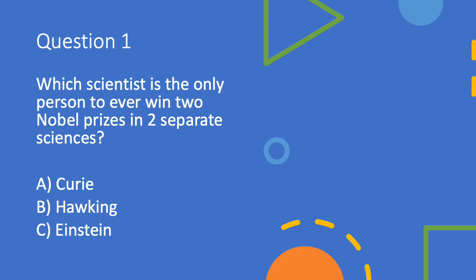Question one. Which scientist is the only person to ever win two Nobel Prizes in two separate sciences? Do you think it's A. Curie, B. Hawking, or C. Einstein? They won two Nobel Prizes in two separate sciences and they're the only person to ever do it.